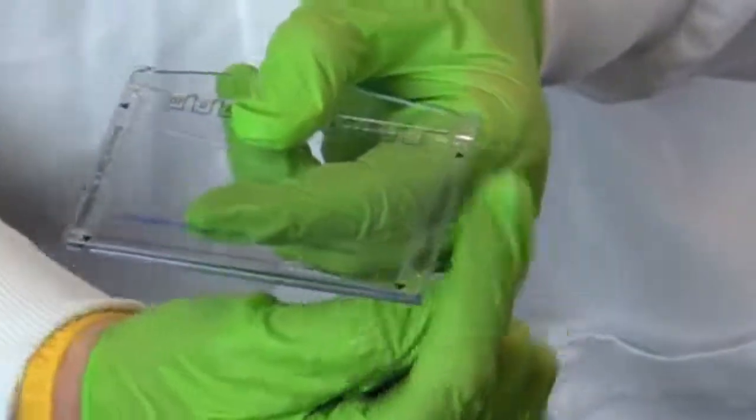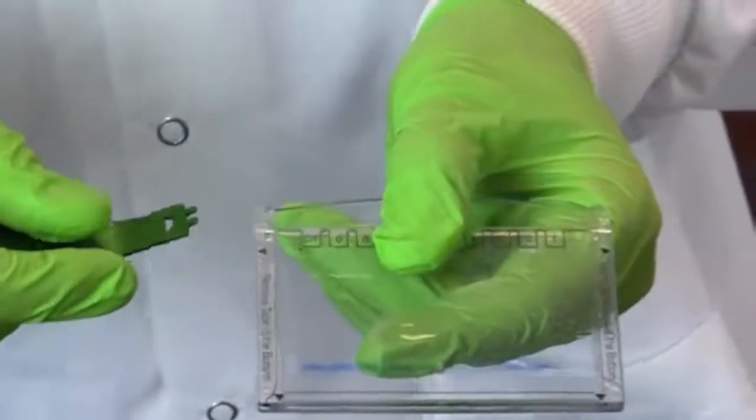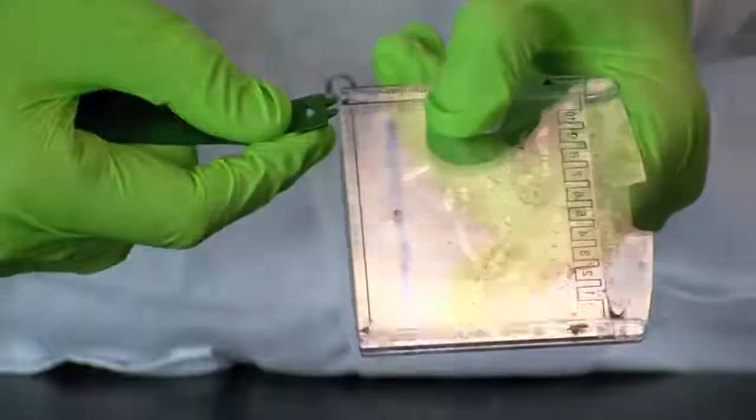Next, remove the gel from the gel cassette using the opening key. Line up the arrows on the opening lever with the four arrows on the cassette to open the cassette.